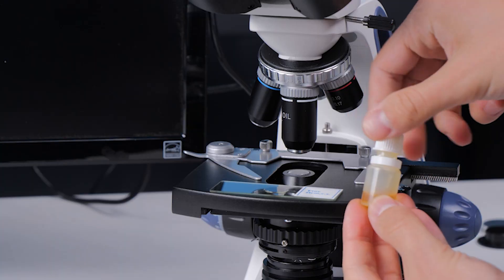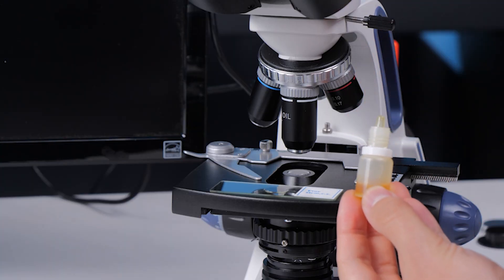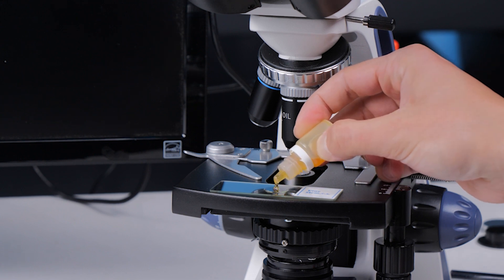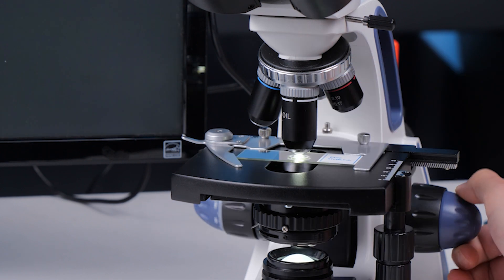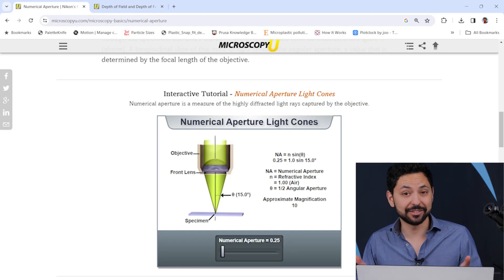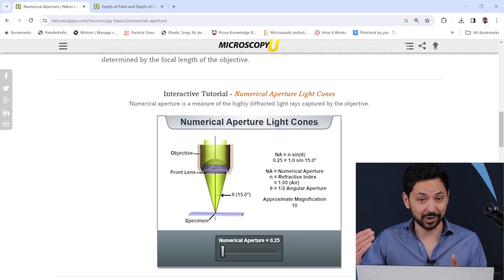And at the extreme end of the high numerical apertures you have to start using immersion oil which you put a drop of between the top of the cover slip and the bottom of the microscope objective, which essentially matches the refractive indices of the pieces of glass to each other. So why does the microscope objective have to get so close to the sample at high numerical apertures?